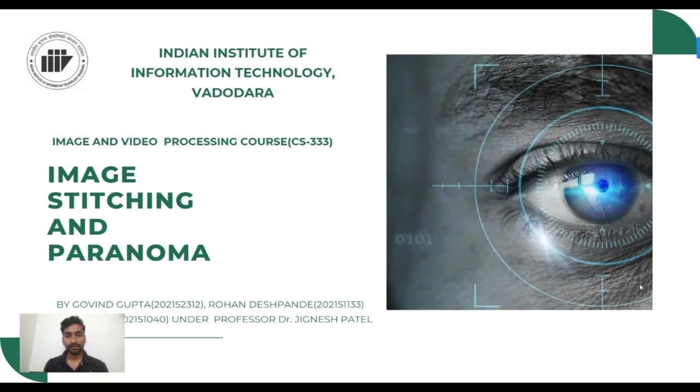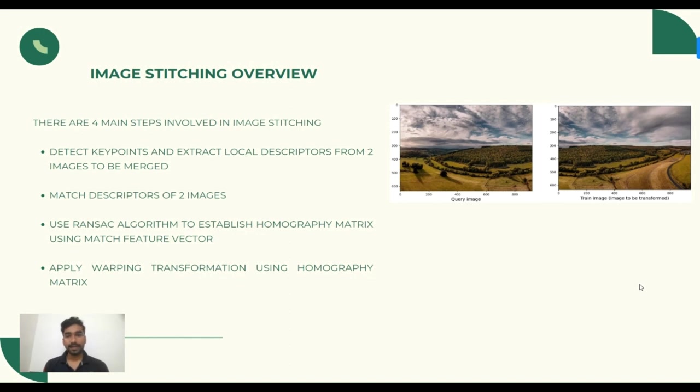Coming to the overview of image stitching, the initial step involves the critical task of identifying key points and extracting descriptors from the two images to be fused. Key points serve as distinguishing characteristics and descriptors encapsulate those unique characteristics. The implementation uses RANSAC algorithm to estimate the homography matrix, which is a 3x3 transformation matrix needed to apply the warp transformation. This transformation provides the basis for smooth alignment of the images so they can be seamlessly integrated into a panorama.